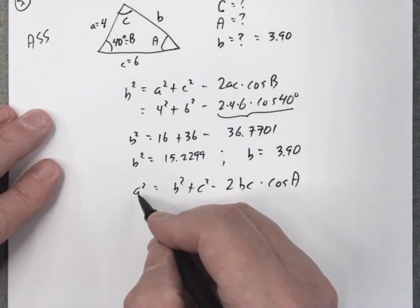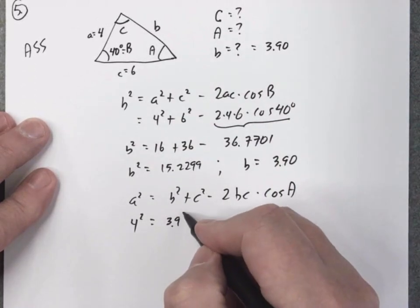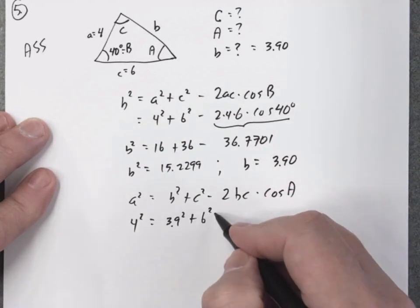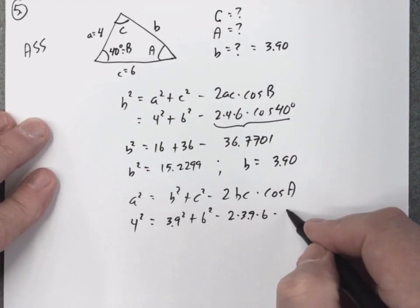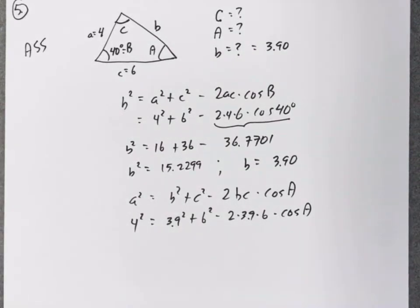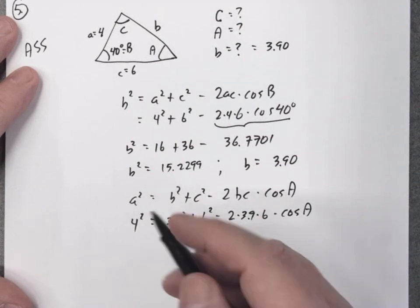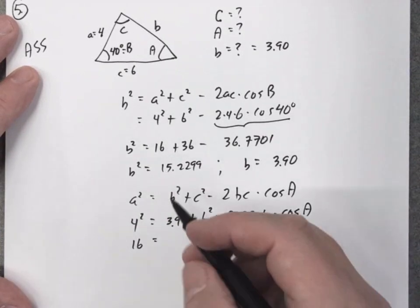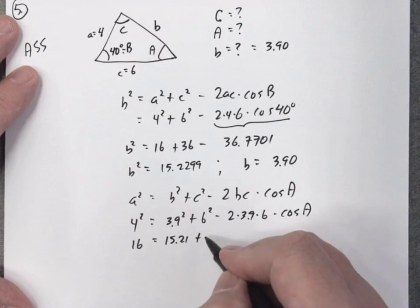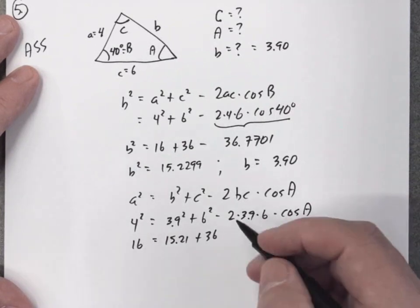I know everything in the equation except angle A, so I plug in: side a is four, side b is three point nine, side c is six, and the coefficient is two times b times c. Squaring the values: four squared is 16, three point nine squared is 15.21, six squared is 36. Then two times three point nine times six equals 46.8.